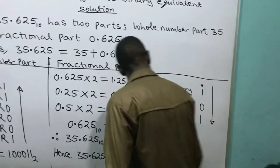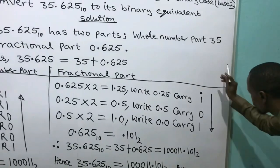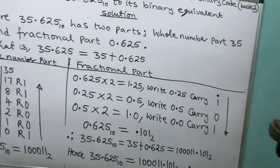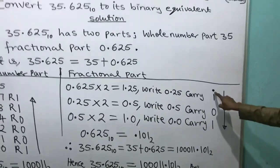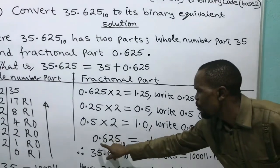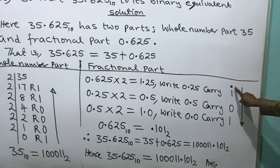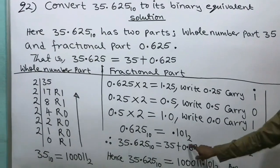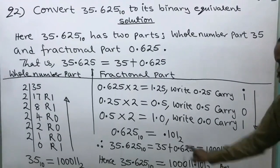Therefore, what is the direction of reading for the fractional part? From top downward — unlike the whole number part which went bottom upward. So from the top down I take: point 1, 0, 1 base 2. That means my 0.625 base 10 equals 0.101 base 2.